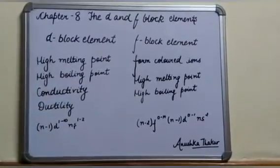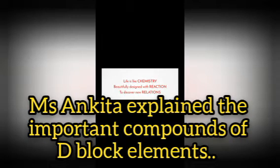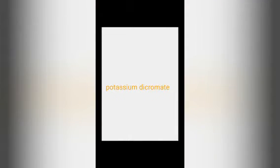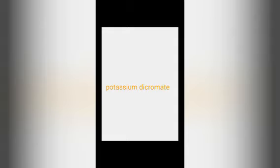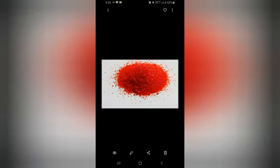Today I am here with chapter 8, d and f block elements, specifically the topics of potassium dichromate and potassium permanganate. Life is like chemistry — beautifully designed with reactions to discover new relations. Potassium dichromate, K₂Cr₂O₇, is generally prepared from chromite ore, which is a mixed oxide of iron and chromium, also called ferrochrome or chrome iron. Potassium dichromate appears as orange-red crystals.